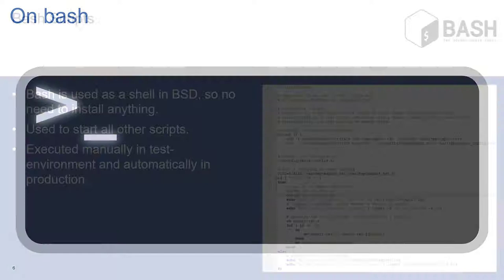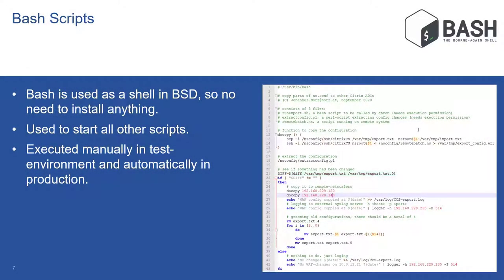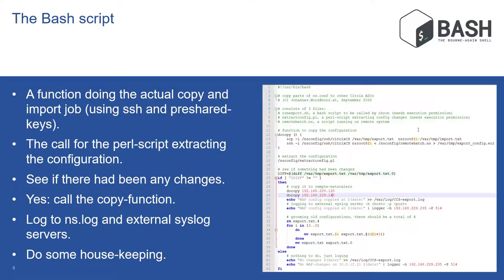Let's have a look at the bash scripts. Why did I choose using bash? Well, it's already there — it's the default shell in BSD, so no need to install anything. I mainly use bash for some housekeeping and to execute all the rest of the scripts. It's executed manually in the test environment and automatically in production environments. The modules in my bash script include: a function to actually copy and import, a call for the Perl scripts extracting the configuration, a check for any changes, copy if there are changes, logging to NSLog and external log servers, and finally some housekeeping.